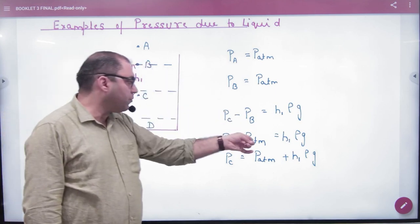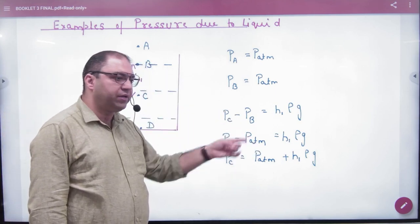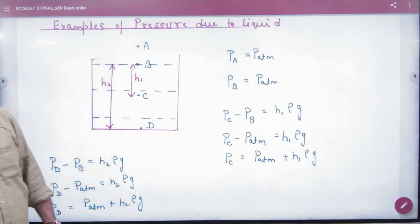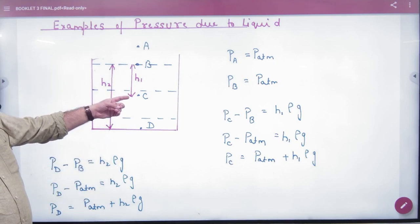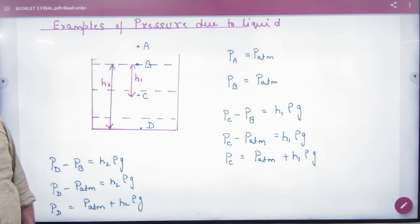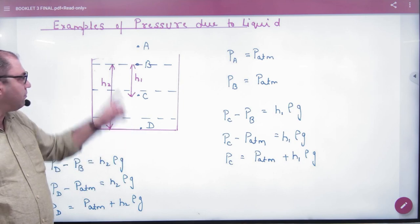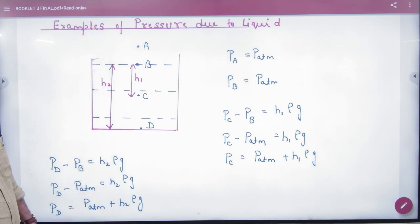And because B point of pressure is P-atmosphere, then C point of pressure is P-atmosphere plus H1-Rho-G. So here the pressure is P-atmosphere plus H1-Rho-G, and here the pressure is P-atmosphere plus H2-Rho-G.